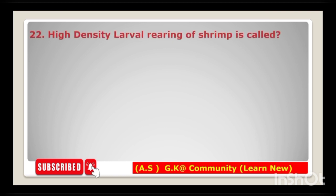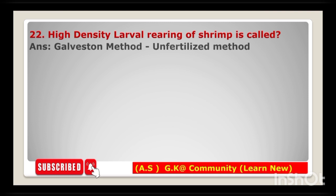Next question: high density larval rearing of shrimp is called — the answer is the Galveston method, also known as the intensive method.